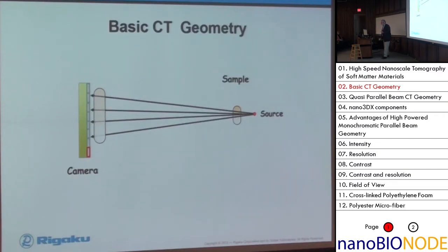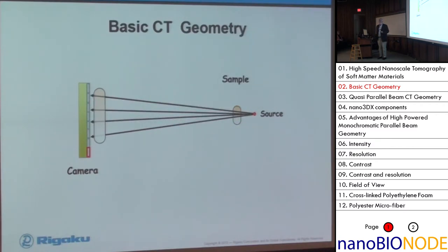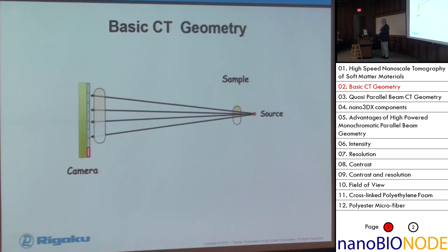This basic CT geometry suffers from a few inherent problems, one of which is the source needs to be very, very small in order to have the resolution. If the source was larger, the resolution would be worse. But because the source is so small, we really can't load it with a lot of x-ray power. If you're familiar with how you generate x-rays, you take an electron beam and shoot it at metal - that metal then will fluoresce x-rays, but it also generates a lot of heat. If you put too much power onto that small spot, you just melt the source.